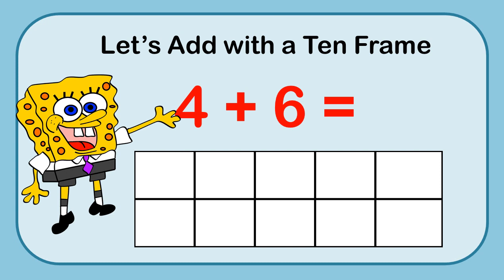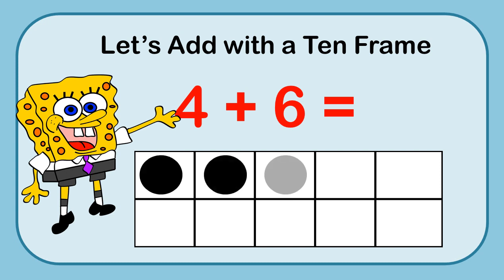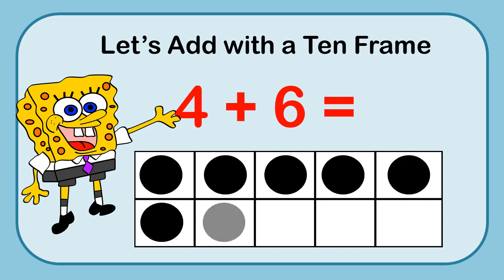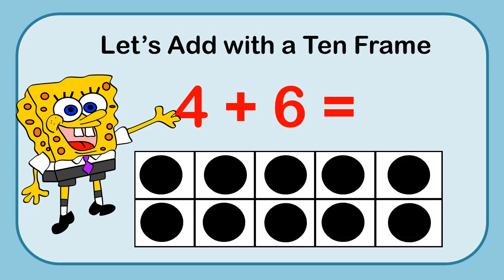Now we're looking at 4 plus 6. Let's go ahead and put our 4 markers in there and then 6 more: 1, 2, 3, 4, 5, 6. You should know your answer — the 10-frame is completely filled up and the 10-frame only holds 10. So 4 plus 6 equals 10.